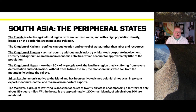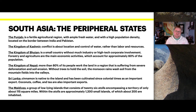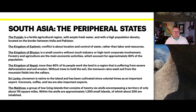The Kingdom of Bhutan is a small country without much industry or high-tech corporate involvement; forestry and agriculture are the main economic activities, accounting for about 60% of the population workforce. The Kingdom of Nepal has about 80% of people working the land in a region suffering from severe deforestation and, as a result, soil erosion. The monsoonal rains wash the fertile topsoil — the O horizon or A horizon — away from the mountain fields into the valleys.